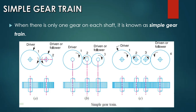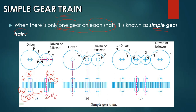Now let us discuss the simple gear train. When there is only one gear on each shaft, it is known as a simple gear train. In the diagram, shaft one carries only gear one and shaft two carries only gear two. These two gears mesh with each other to transmit power from one shaft to another. We give input on shaft one and get output from shaft two.